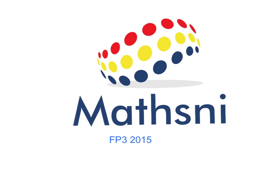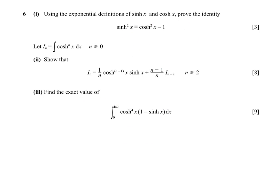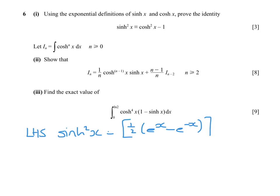FP3 2015. To prove our identity, if we start with the left hand side, sinh squared will be one half of e to the x minus e to the minus x, all squared. So that is one quarter of e to the 2x minus 2 plus e to the minus 2x.